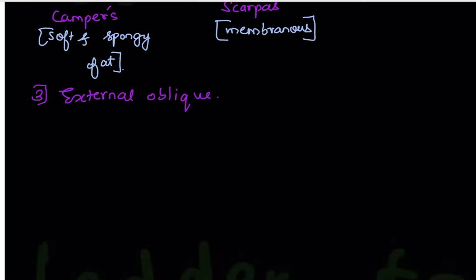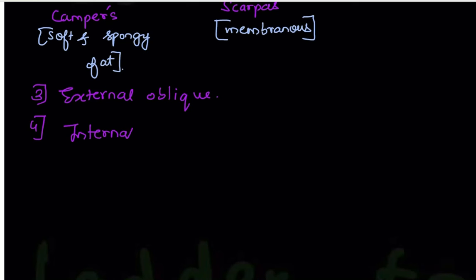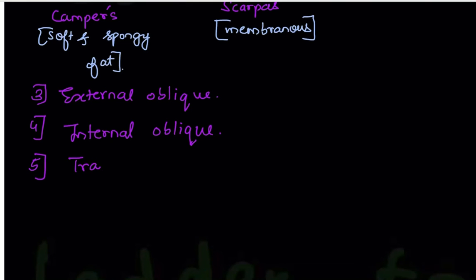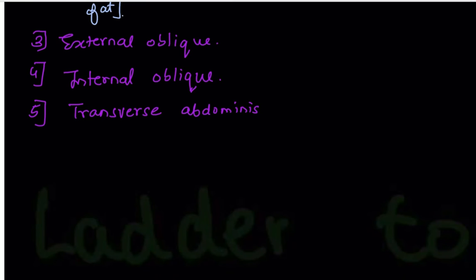The third layer is external oblique — it's a muscle. The fourth layer is internal oblique. If you remove the external oblique you can see the internal oblique; they are situated obliquely, which is why they are given the term 'oblique.' The fifth is transverse abdominis, also a muscle.